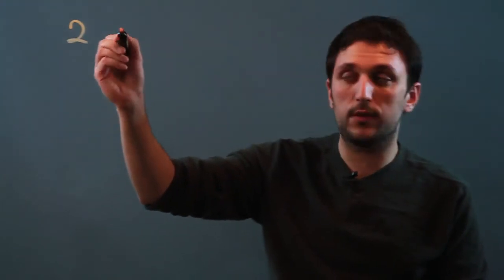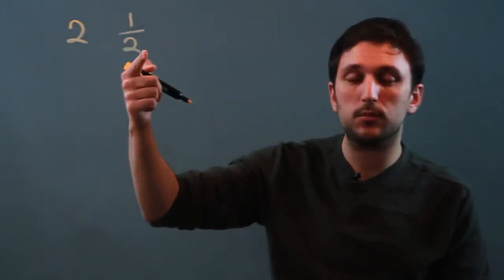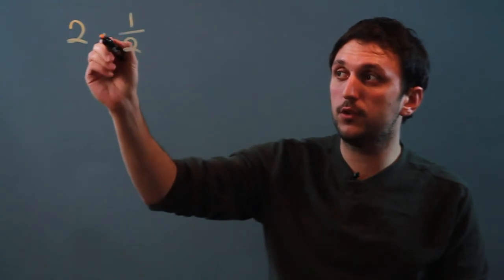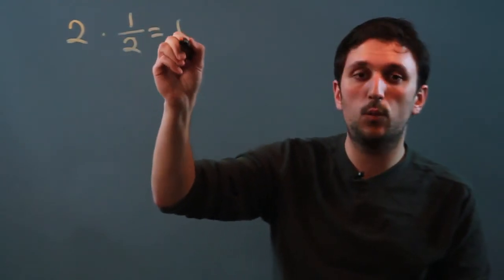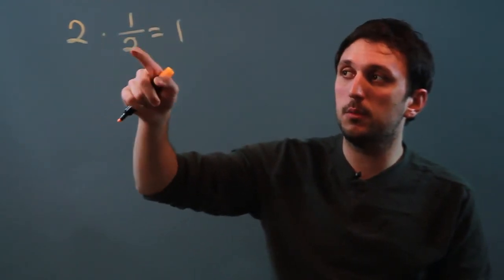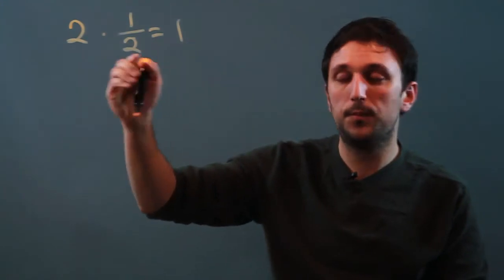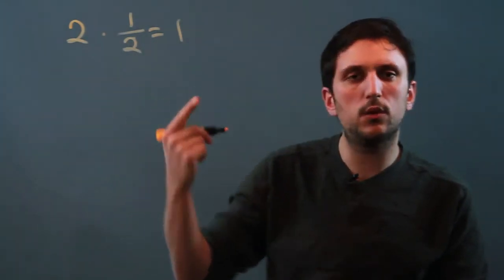Well, a reciprocal of a number is the flip of a number. So 2, and its reciprocal, 1 half. Its basic use: 2 times 1 half equals 1. So it's the number that you can multiply by to get back to 1.